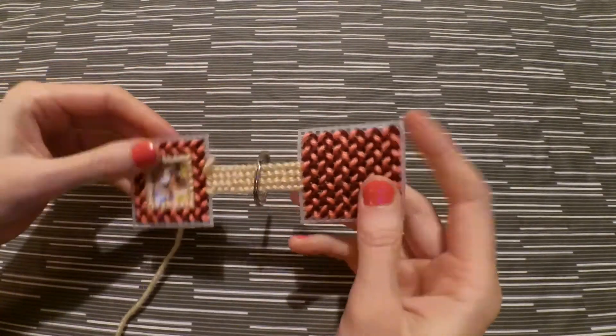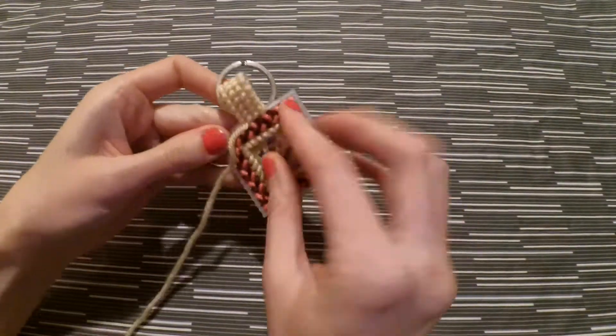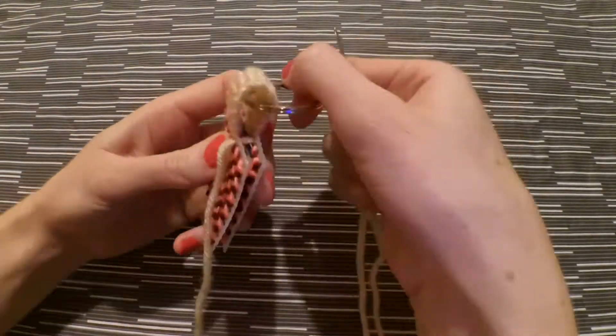Now you're just going to fold the canvas a little bit and slide on your keyring. And now fold it in half and just whip stitch the whole thing together.